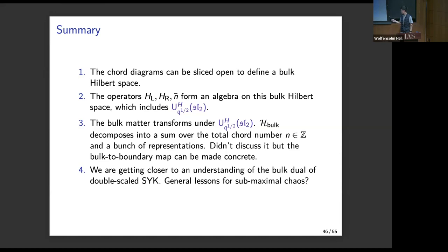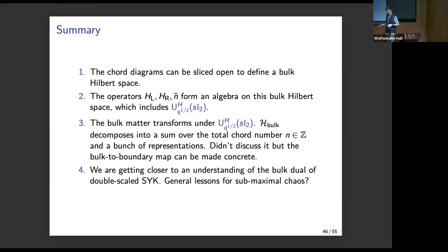That bulk-to-boundary reconstruction works even when the Schwarzian fluctuations are large or small, and the q-deformation parameter can be large or small. So it's a very general bulk reconstruction — the analog in super Yang-Mills would be like doing a bulk reconstruction that includes all string corrections. This works well in a regime where the chaos exponent could be quite small. We are getting perhaps closer to an understanding of the bulk dual, and perhaps there are also some general lessons for sub-maximal chaos. Thanks very much.